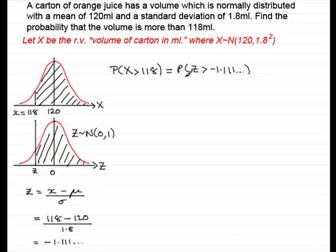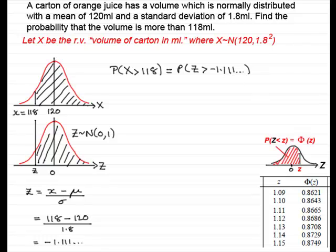Now we need to use the cumulative normal probability tables and we'll bring those up here. Here's an extract. Now you'll find these tables in any set of formula tables or possibly in the back of statistics textbook.